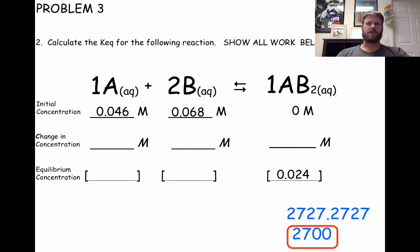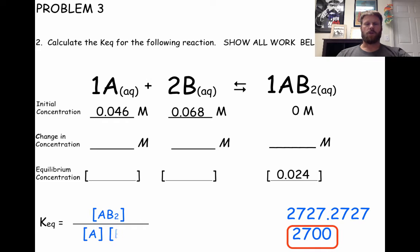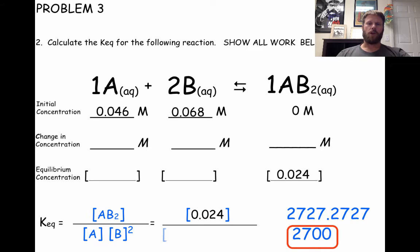What if the equation that reaches equilibrium does not have a nice 1-to-1-to-1 ratio? What do you do then? Let's look at this problem. We're given the initial concentrations of our reactants and the equilibrium concentration of our product. We can write the equilibrium expression as products over reactants. Remember to square B because we have a 2 in front of B in the balanced reaction. We already know the equilibrium concentration of our product, so we know our numerator. We just have to figure out our denominator by determining the equilibrium concentrations of our reactants.